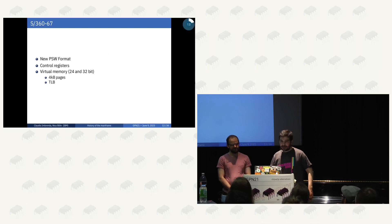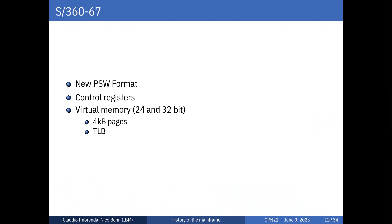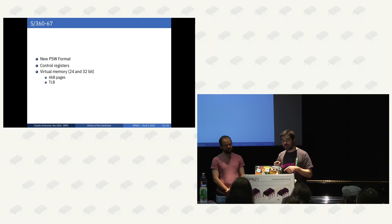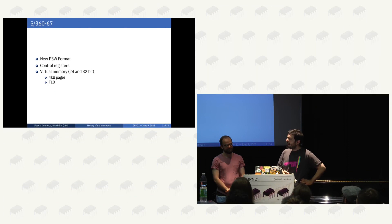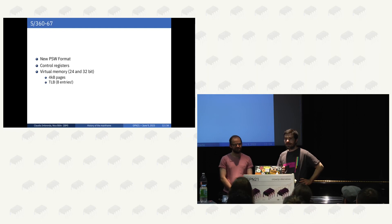The S360/67 had virtual memory, some control registers to handle it, a new PSW format, 4-kilobyte pages, and a TLB. Looking at the documentation, it went into very specific detail on how the TLB works, how new entries are formed, and how entries are evicted. We wondered why so much detail — well, it had eight entries. So you needed to write your software carefully to make sure you wouldn't trash the TLB all the time.